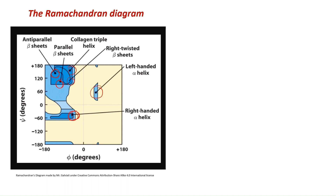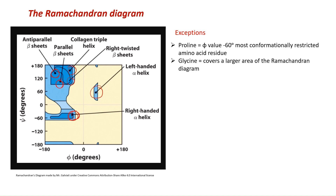Comparing all amino acids, glycine covers the largest area in the Ramachandran plot because its R group is just a hydrogen atom, giving it the least steric hindrance. Proline is the most restricted amino acid and covers the least area. These two are exceptions; for the rest, remember which quadrants correspond to which structures.